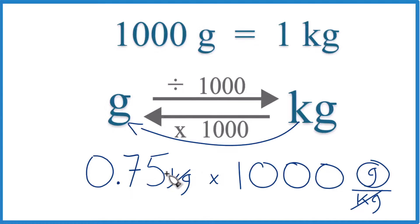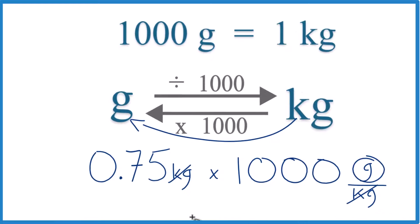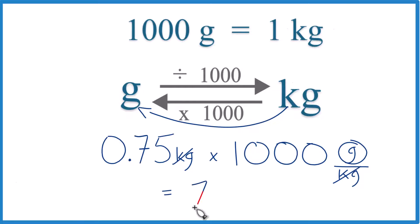So 0.75 times 1,000 grams equals 750 grams.